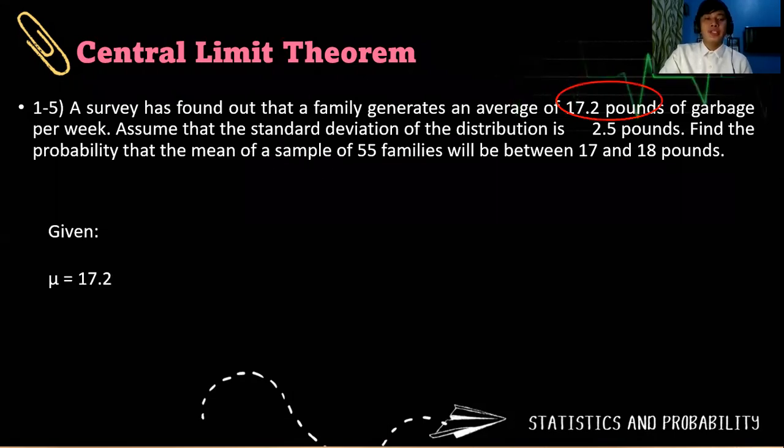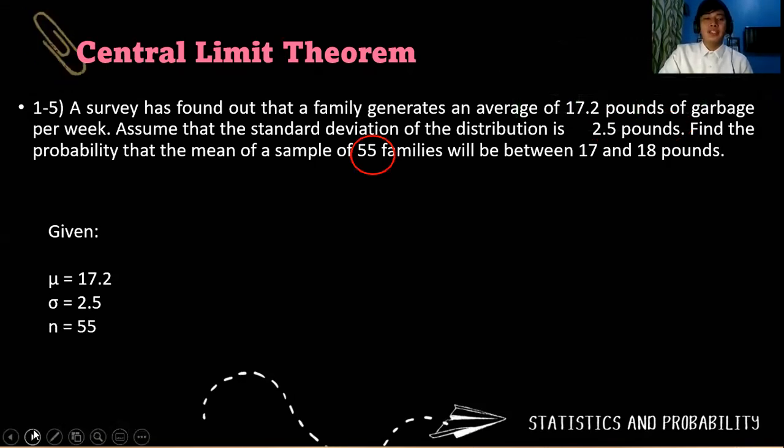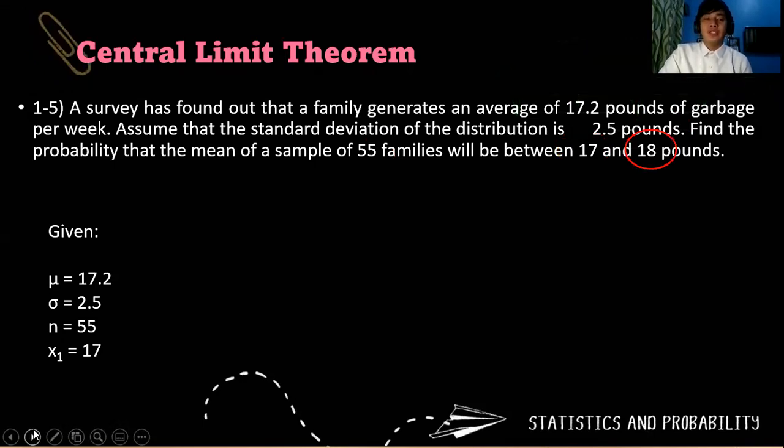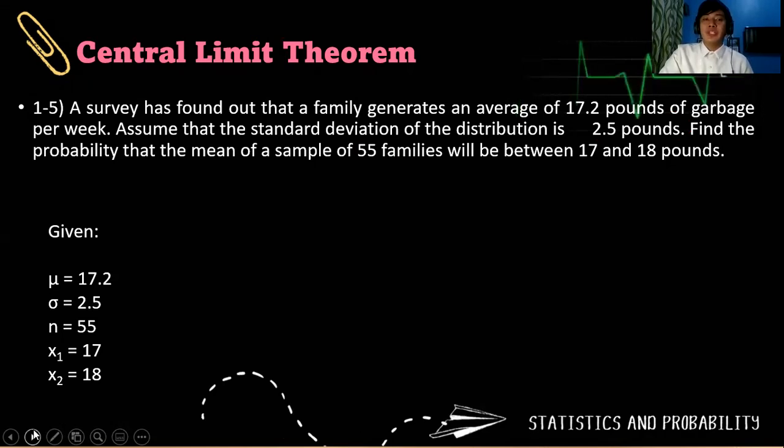For the given, we have μ equals 17.2 pounds, the population standard deviation is 2.5 pounds, our sample size n is 55. Again, this is a large sample. Our first x raw score is 17, and we have a second raw score at 18. Therefore, we have two vertical lines here.